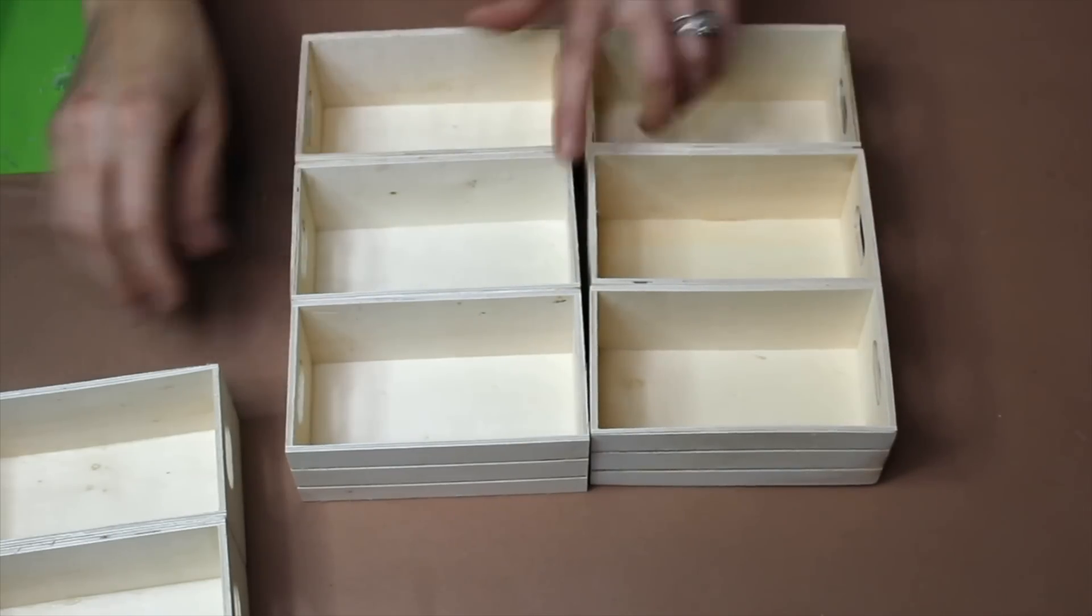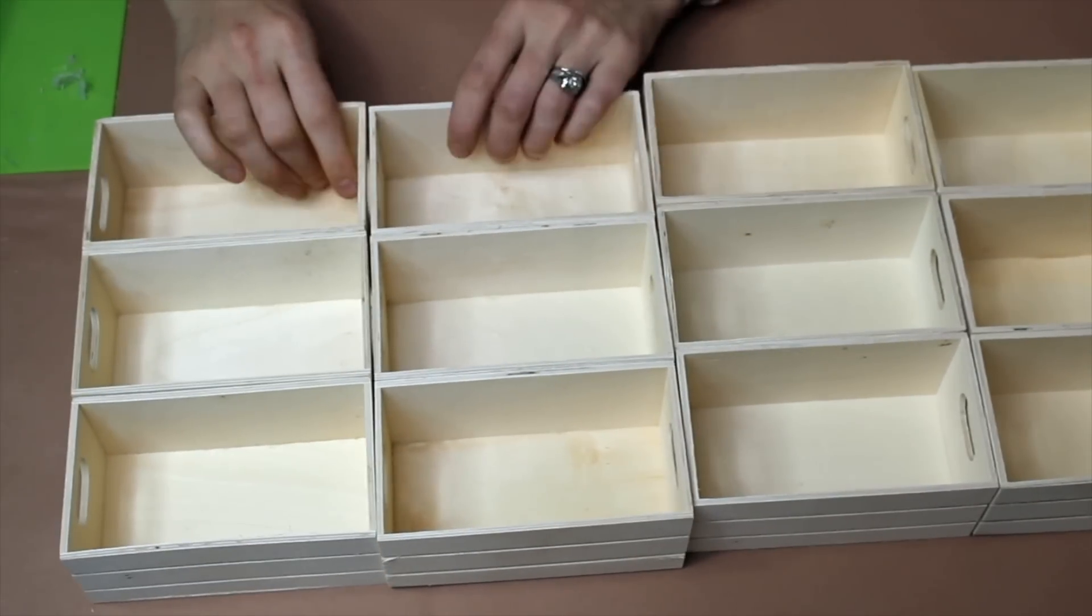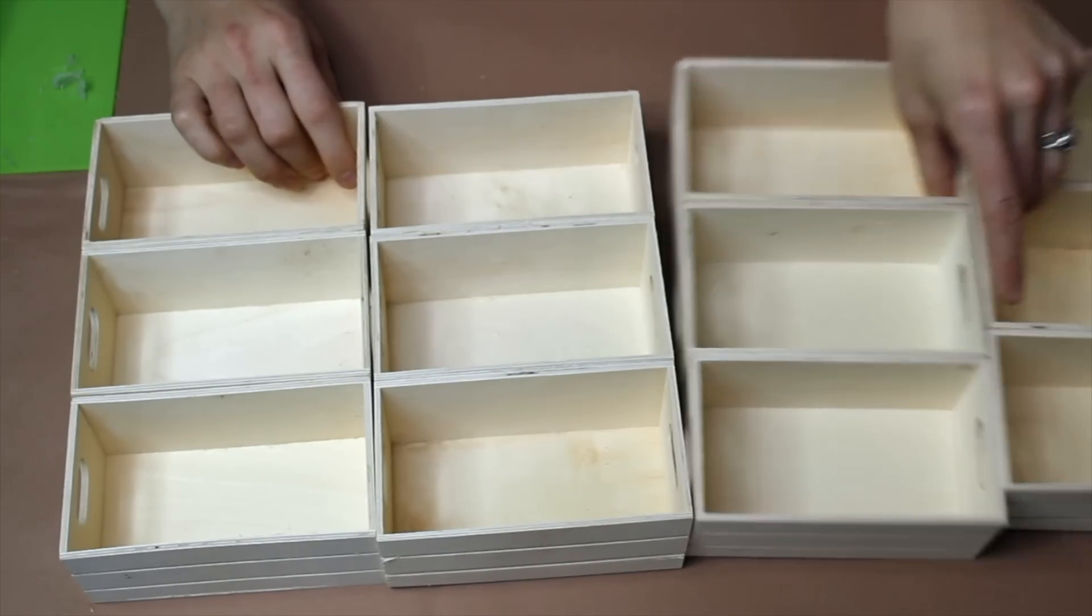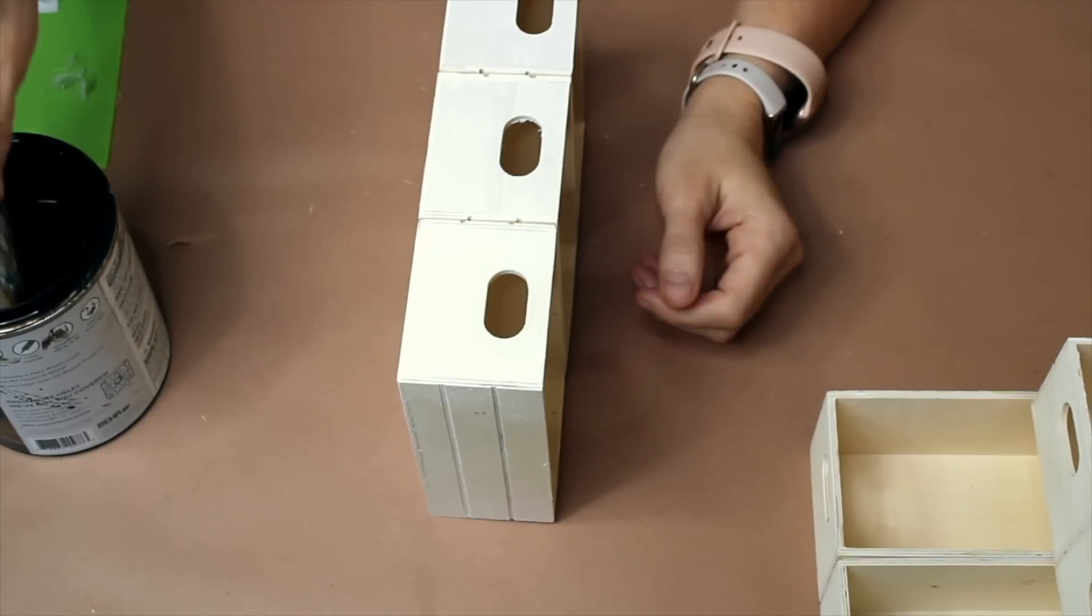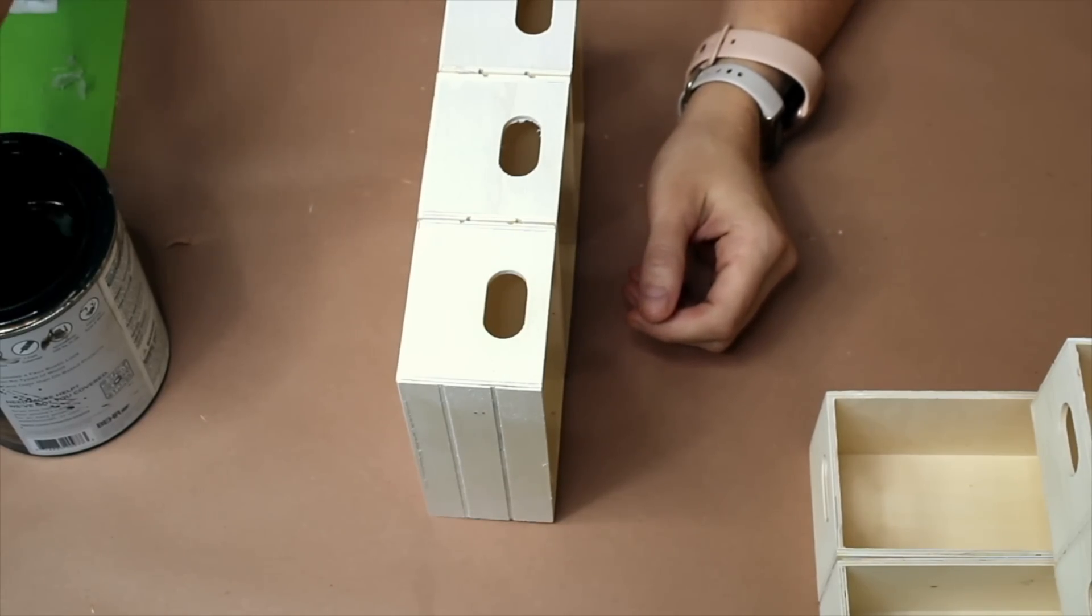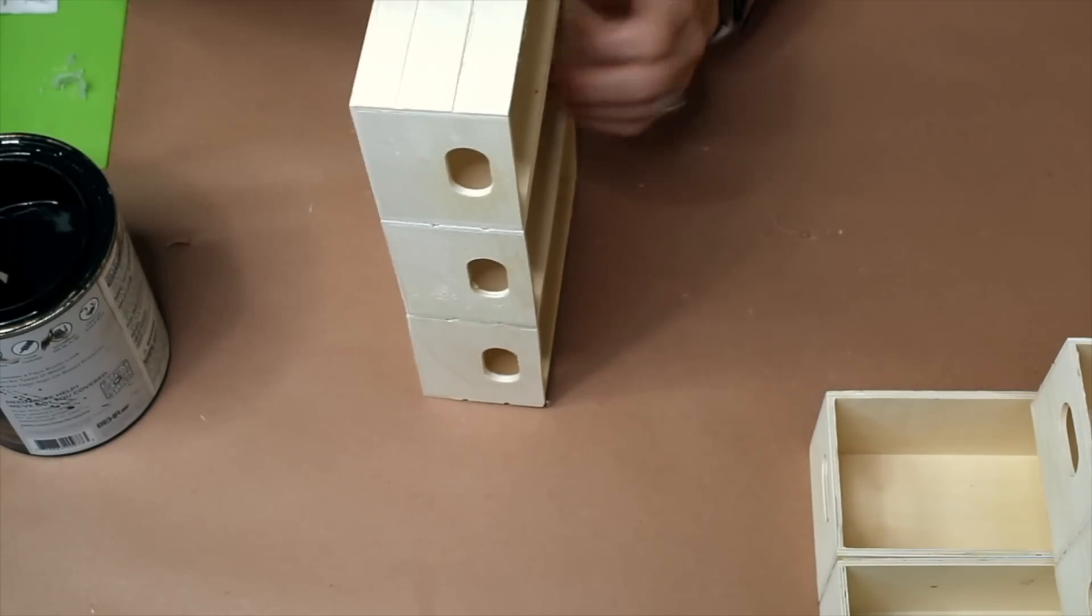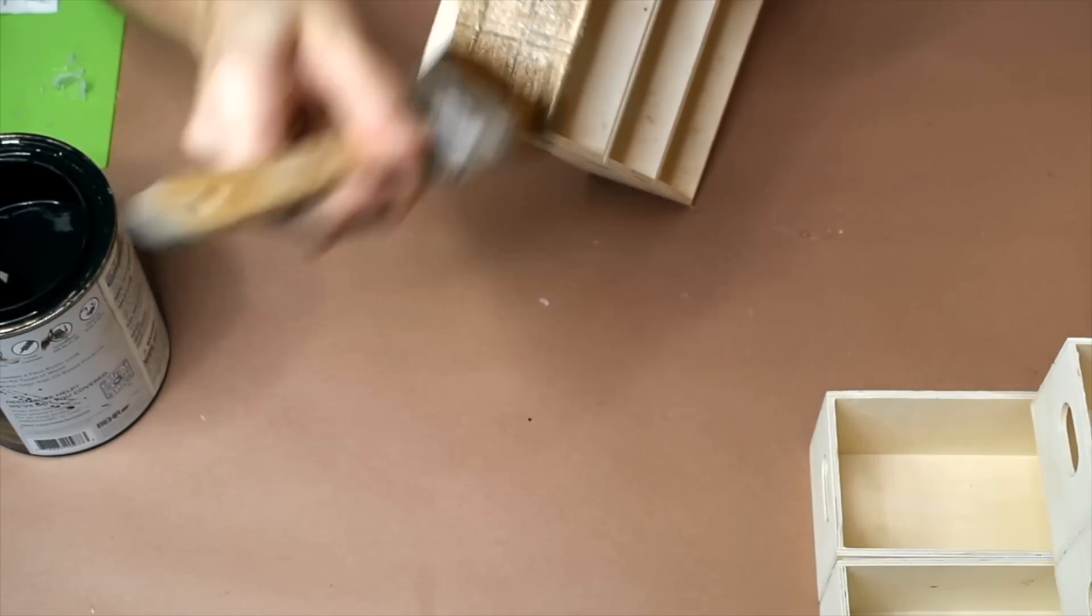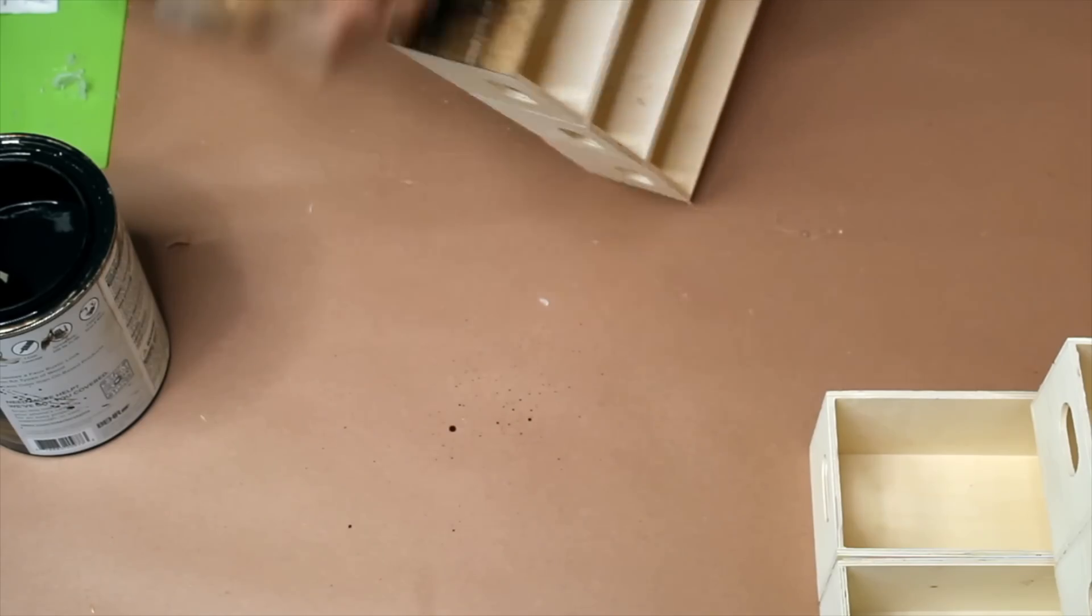Alright, so now that I have four of these stacks, what we're going to do is we are going to be using some wood stain and I'm going to be applying this with a paintbrush. You can also use a sponge if that's something you feel better about. I always say less is more because you can always go back and add more if you want to darken it up a little bit.